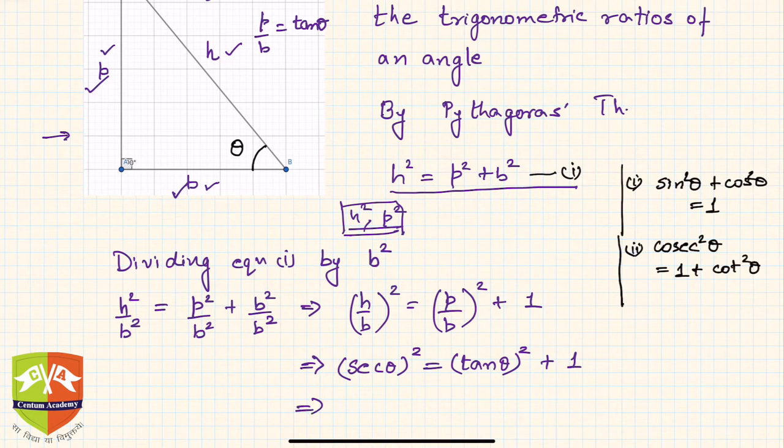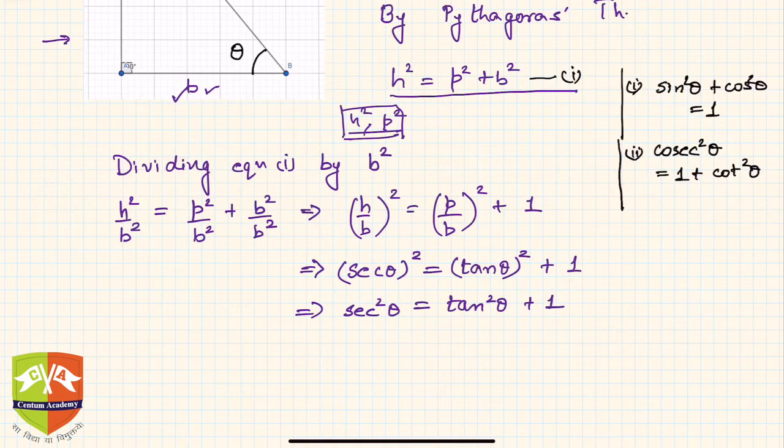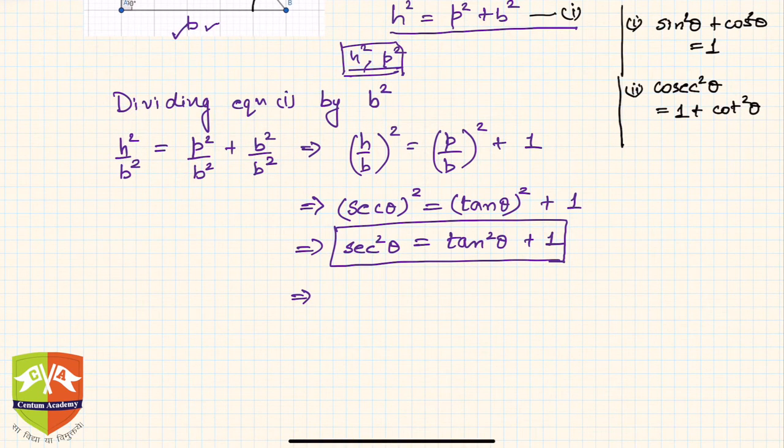Again, as in the other cases, we can express this relation into multiple forms. I can write secant squared theta minus tan squared theta